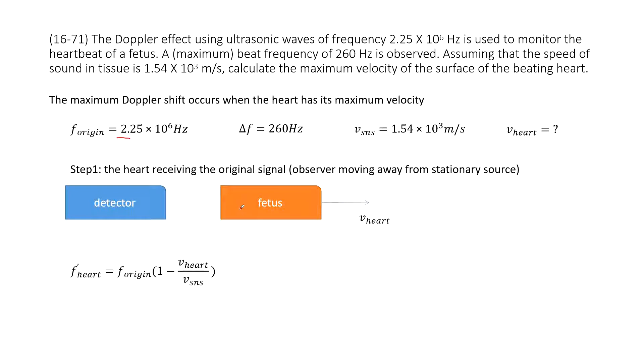And then this wave reflected to the detector and measured it. And then we find the difference for these two frequencies - the signal out and the signal received is 260 Hz. And another thing we know is the speed of the sound wave in these tissues is given there. The question asks you the speed of the heart beating.